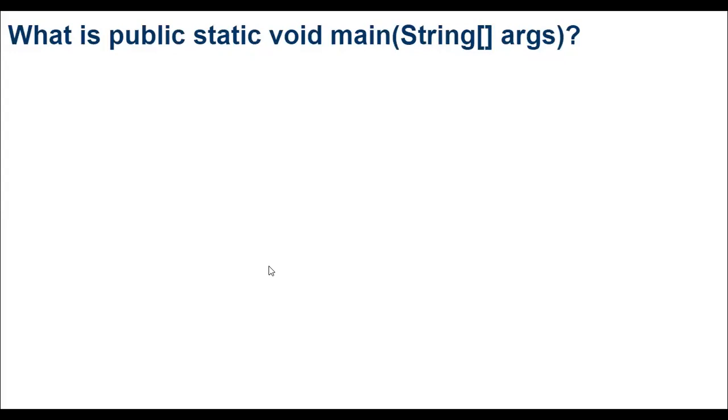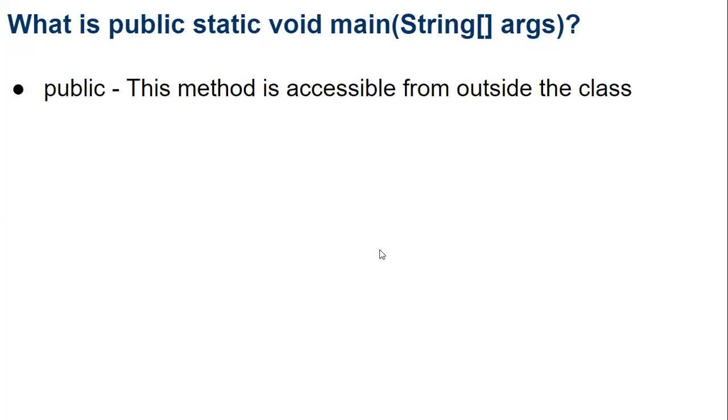To answer this question we are going to look at all the keywords which are public, static, and void. So let's go through them one by one. The main method is public because the main method can be called from outside the class.